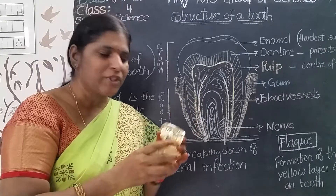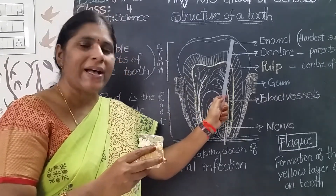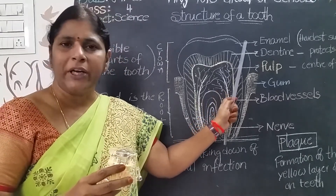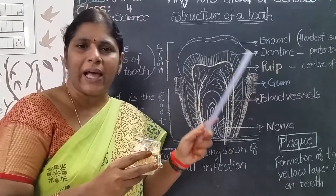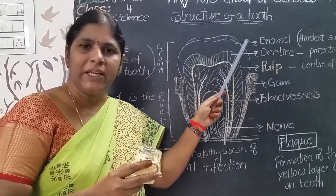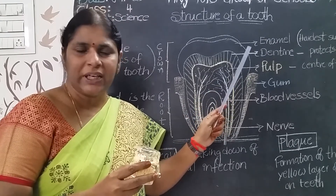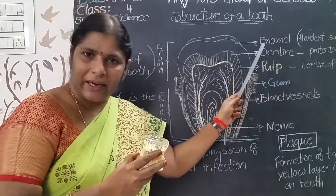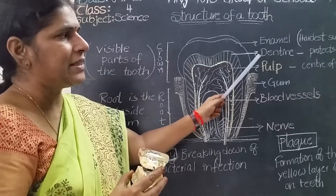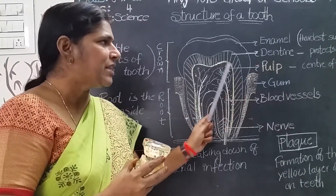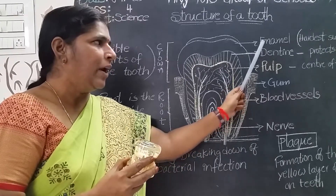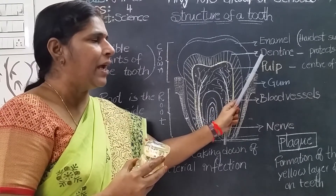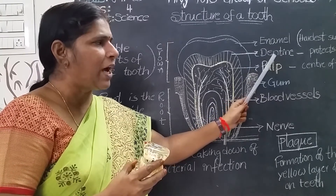Enamel is the hardest substance in the body because it has a lot of calcium. Enamel is the protective outer layer of the tooth. Below the enamel is the dentine. Dentine is less hard than enamel because it has less amount of calcium. Dentine protects the pulp of the tooth.